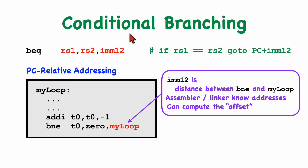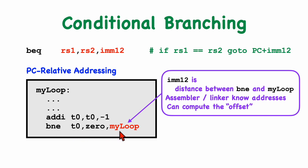There are a number of conditional branching instructions, and each one takes two registers, performs a test, and then optionally jumps to some target address. Here's an example with branch on equal, and down here in this code example we have a branch on not equal. In this case we are decrementing some counter in register T0 and then comparing it to the zero register. The target address is PC relative — the instruction has room for an immediate 12-bit value and the target is computed by adding that to the program counter.